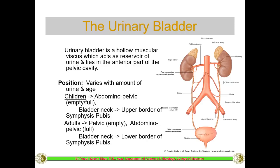The position of the bladder varies according to the amount of urine present as well as the age. In case of children, the bladder will be an abdominal-pelvic organ, so it will be partly in the pelvis as well as partly in the abdomen - both whenever it is empty as well as when it is full. In both conditions it remains an abdominal-pelvic organ.